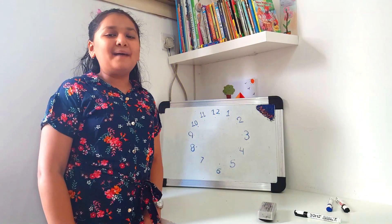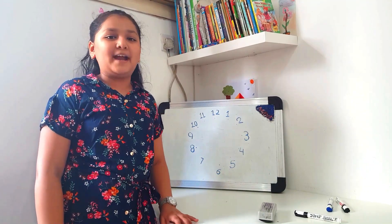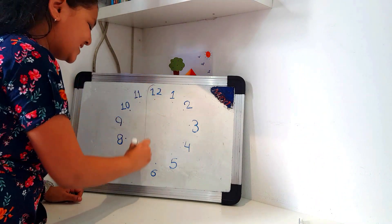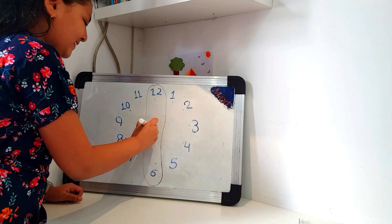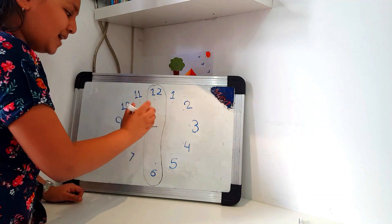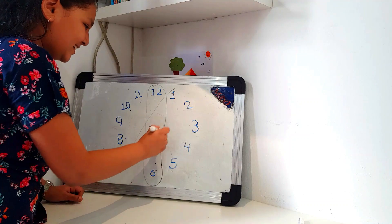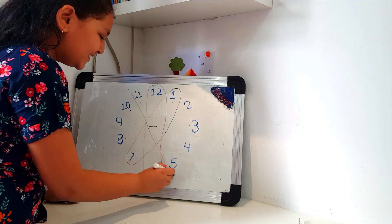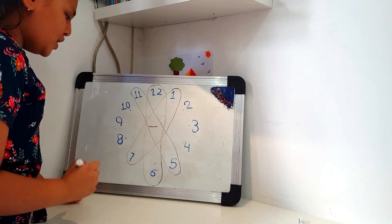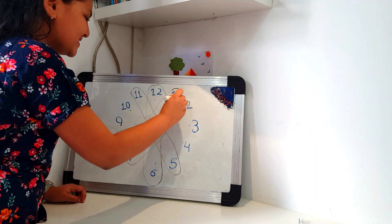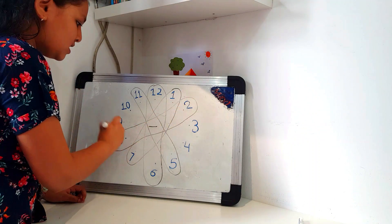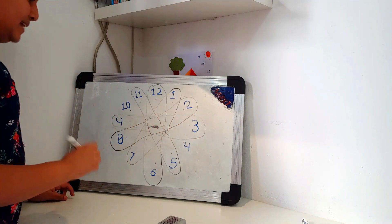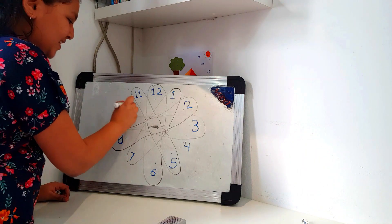Friends, we have found some patterns in addition. Let's see if we can find out patterns in subtraction. 12 minus 6 is 6. And let's see. 7 minus 1. Yes. It is 6. 11 minus 5 is 6. Yes. You are right. 8 minus 2 is 6. This is also 6. 9 minus 3 is? It is 6. 10 minus 4 is also 6.